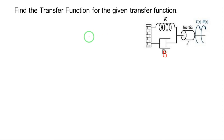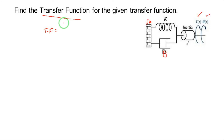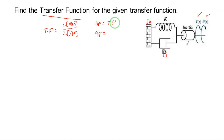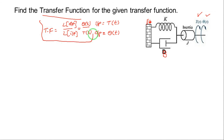For better understanding we will solve a basic simple problem in rotational systems. The system has spring constant K, frictional constant B, moment of inertia J, applied torque T(t), and angular displacement theta(t). The transfer function means Laplace transformation of output to Laplace transformation of input. The input is applied torque T(t) and the output is angular displacement theta(t), so we need to find theta(s) / T(s).